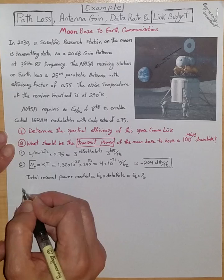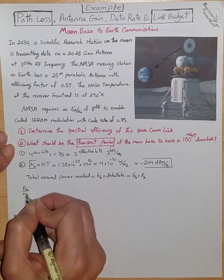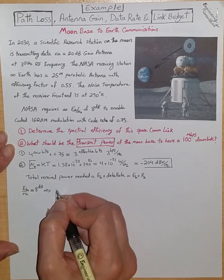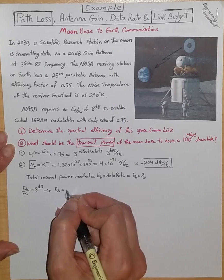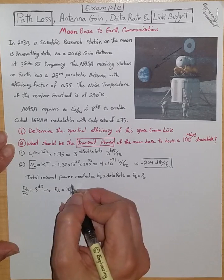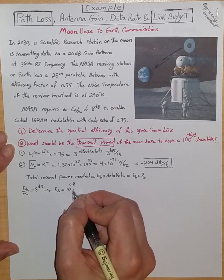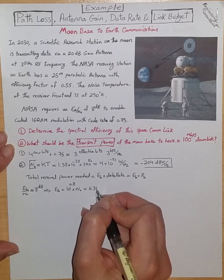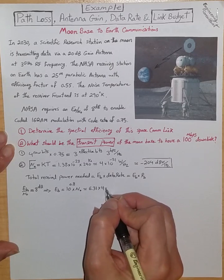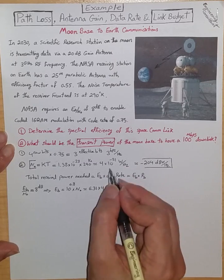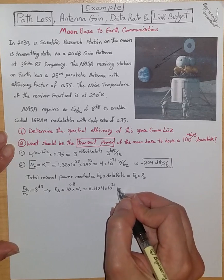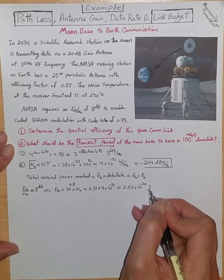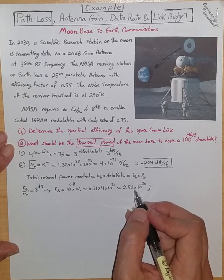Eb over N0 is given to be 8 dB. From here, in a linear scale, I have Eb is 10 to the 8 dB divided by 10, which is 10 to the 0.8, times N0. This equals roughly 6.31 times 4 times 10 to the minus 21 that we just computed for N0, which translates to roughly 2.52 times 10 to the minus 20 joules for Eb.